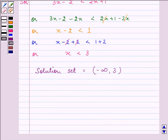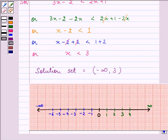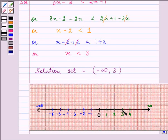So, let us have a graph on which we have a number line. Now, we need to have the solution set equal to minus infinity to 3. So, it will be from 3 to minus infinity.